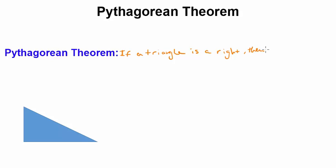Then the square of the hypotenuse (I'm going to abbreviate hypotenuse, hypotenuse being the longest side of the triangle) is equal to the sum of the squares of the other two sides.